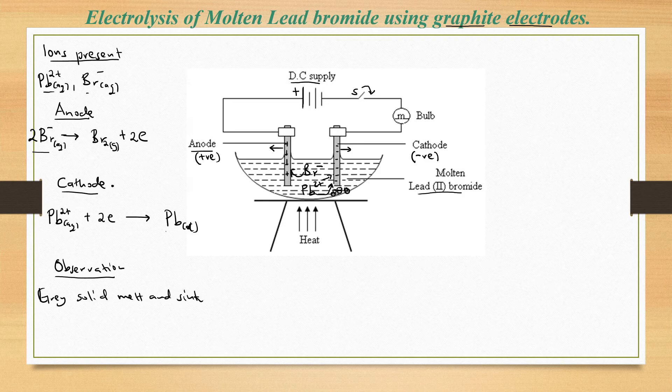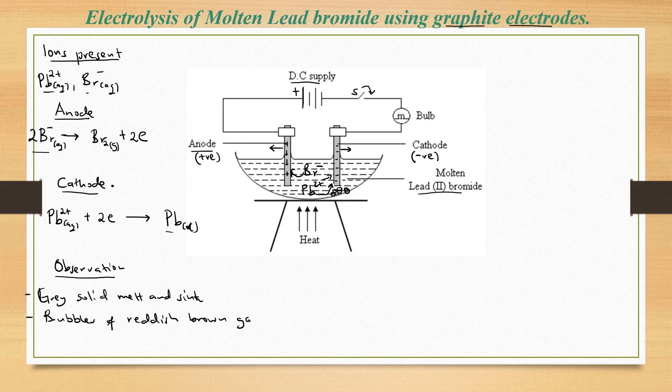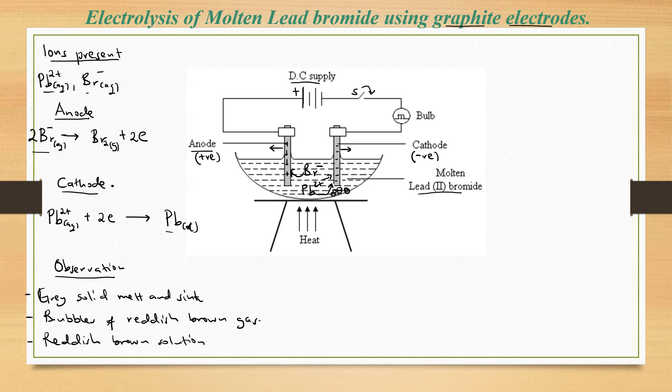However, at the anode, we shall see bubbles because of a reddish brown gas, which is bromine gas. However, because bromine gas is also slightly soluble in water, we might also form a reddish brown solution in the process. This brown solution may be formed because the bromine may dissolve in our water or in our solution here.